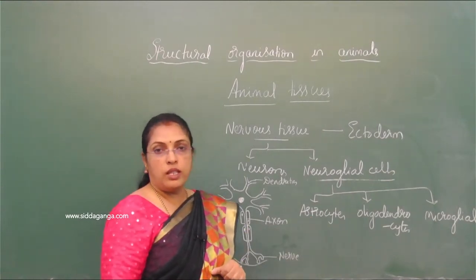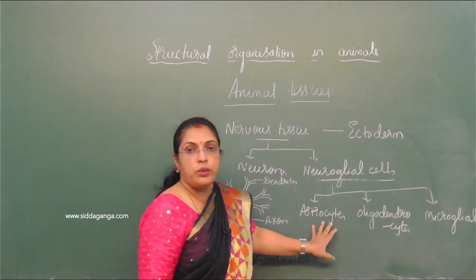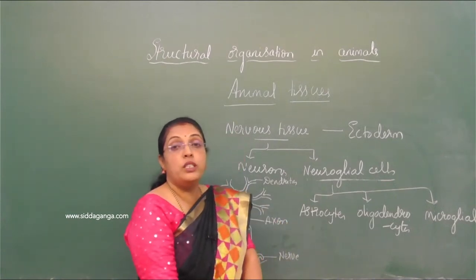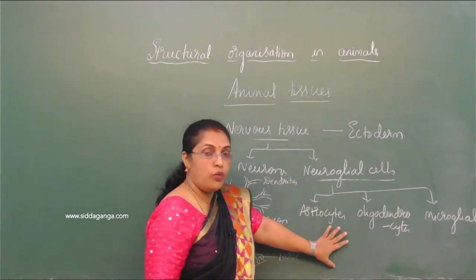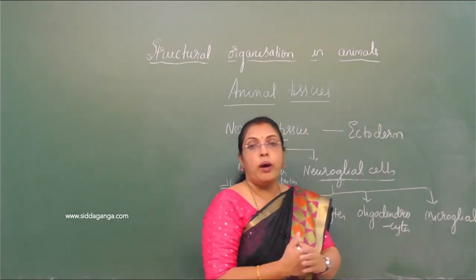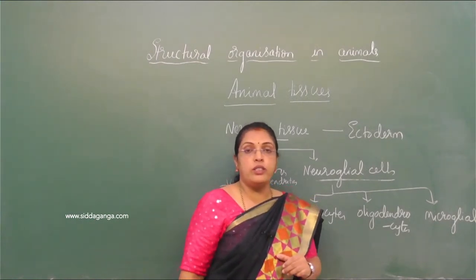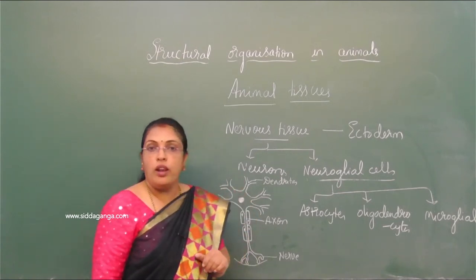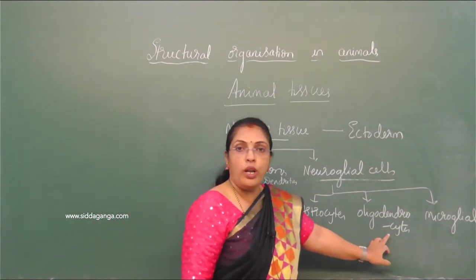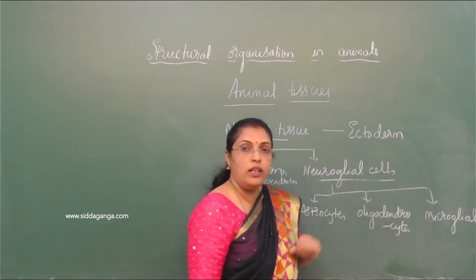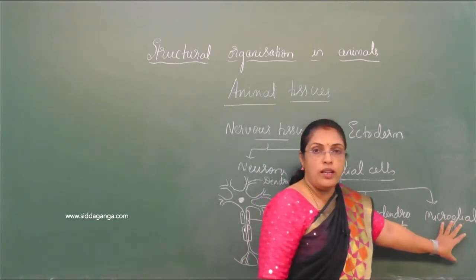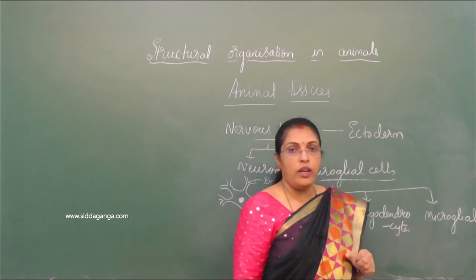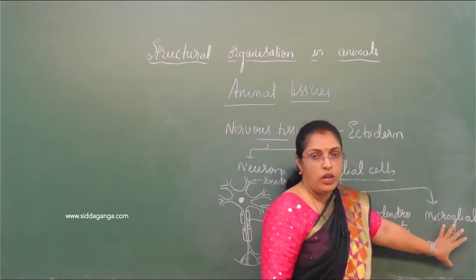Schwann cells mainly help in myelogenesis in the peripheral nervous system. Astrocytes help in repair of damaged nerve tissue. Oligodendrocytes help in myelogenesis in the central nervous system. Microglial cells are phagocytic in nature — they engulf disease-causing microbes, thereby providing immunity to the nervous tissue.